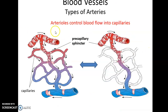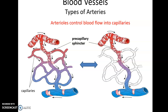Arterioles are able to control blood flow into the capillaries. Arterioles that send blood to capillaries have pre-capillary sphincters. Those sphincters can contract to prevent blood from entering capillary beds, or they can relax to allow blood to flow into capillary beds. This maximizes blood flow to places in the body that need it most — for example, if you were doing a lot of pull-ups, you would have reduced flow to the leg muscles but increased flow to the arm muscles.